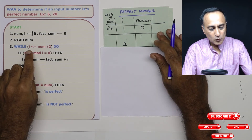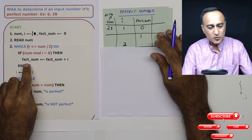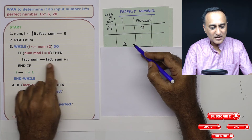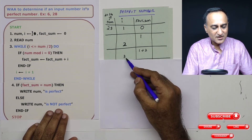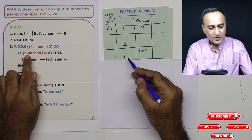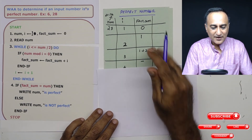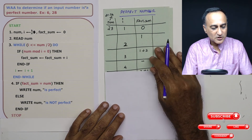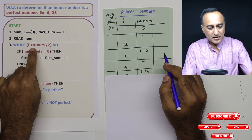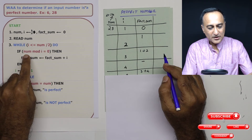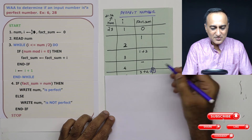Now I=2 is less than 14. 28 divided by 2 — remainder is zero, so fact_sum becomes 1 plus 2 equals 3, and I becomes 3. Now 3 is less than 14. 28 mod 3 is not zero, so I only increase I — I becomes 4. When I is 4, 28 mod 4 is zero (since 4 times 7 is 28), so fact_sum becomes 3 plus 4 equals 7. I is then increased to 5.